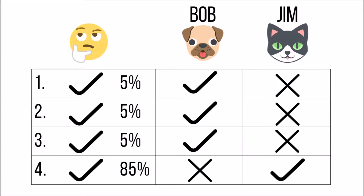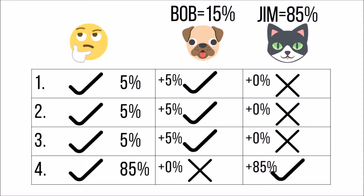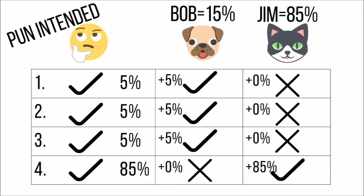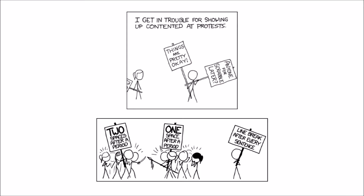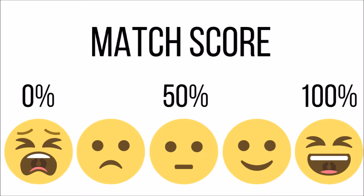We've been modeling how people vote by attempting to match their stances on issues with the candidates' stances on issues, and we've found two primary results. First, candidates with the most extreme political leanings tend to win, and second, the population ends up being approximately 50% satisfied with the winner.